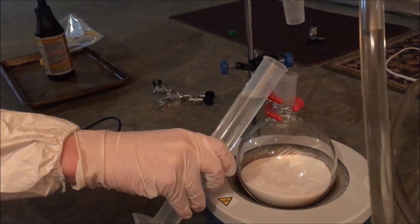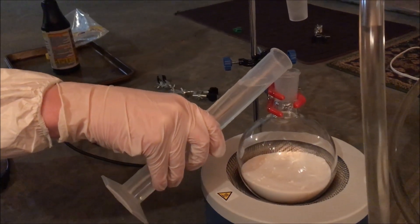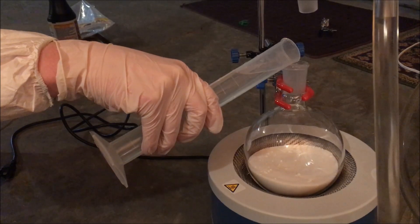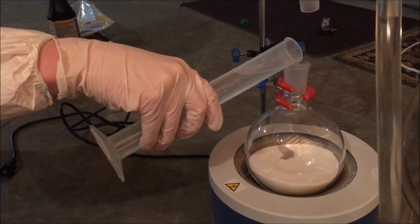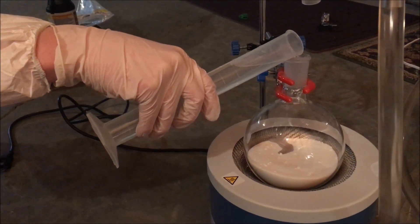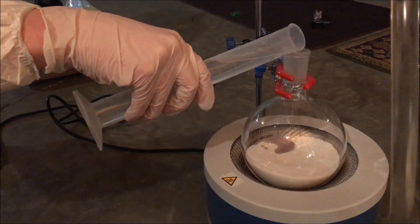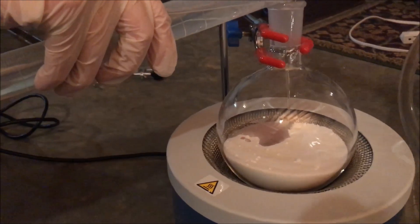I then added this sulfuric acid into the same flask with the potassium nitrate. When mixing the two, it might make a little bit of heat and a little bit of nitrogen oxides. So be careful.